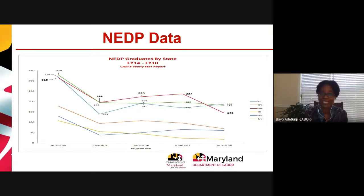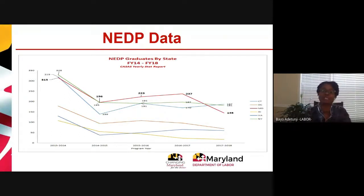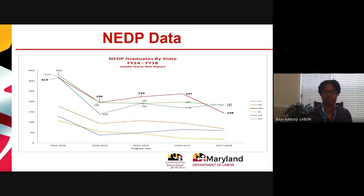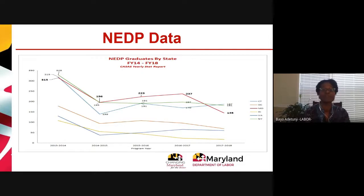I wanted to touch on where Maryland came from in terms of NEDP performance. Maryland is a leader in this data. California was excluded by CASAS because its size would have skewed the data. From NFY 14, New York was the only NEDP jurisdiction above Maryland in diploma outcomes — New York had 329 and Maryland had 315. But from FY15 through FY17, Maryland took the lead, producing the most diplomas of any state excluding California.